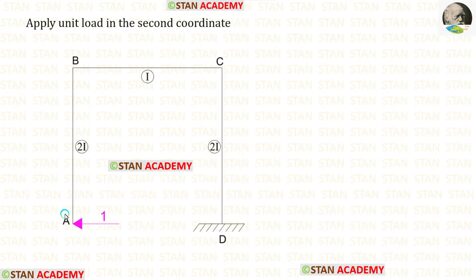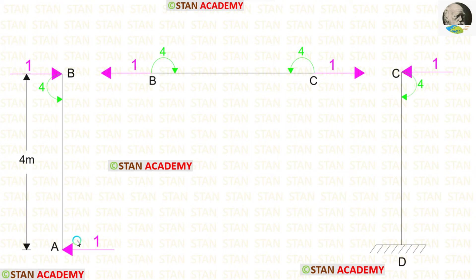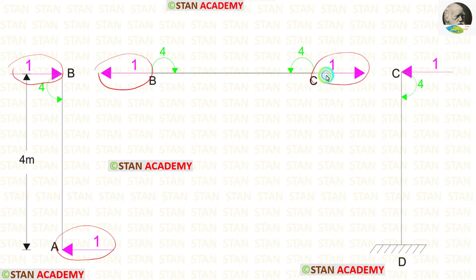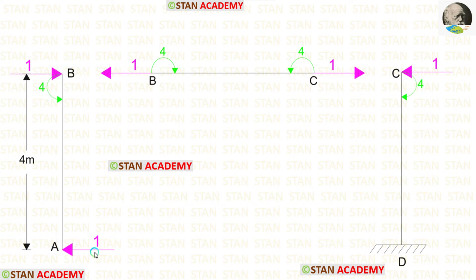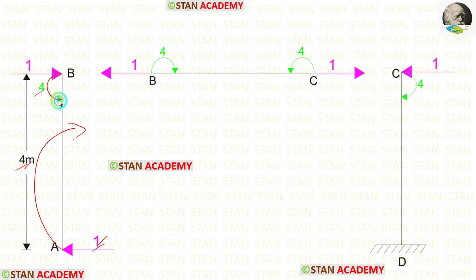Now let us apply a unit load in the second coordinate and find M2. We make the free body diagram: the unit load is applied at point A towards the left, so a reaction develops at point B towards the right, then left at the next joint, then right, and left at the support. The moment at point B is 1 × 4 = 4, acting clockwise, so the developed moment is anticlockwise at one end, clockwise at the next, anticlockwise, and clockwise.